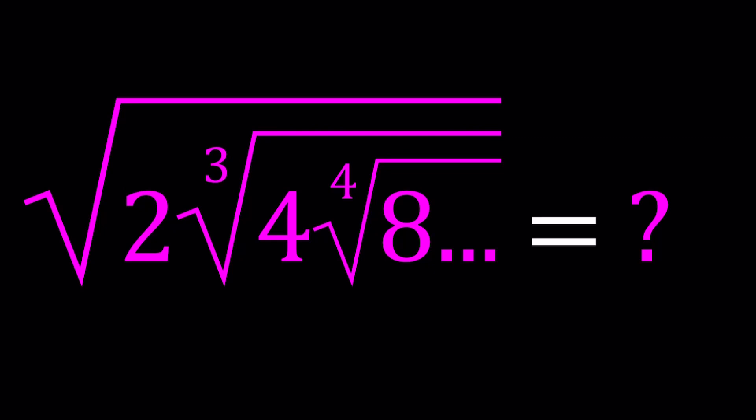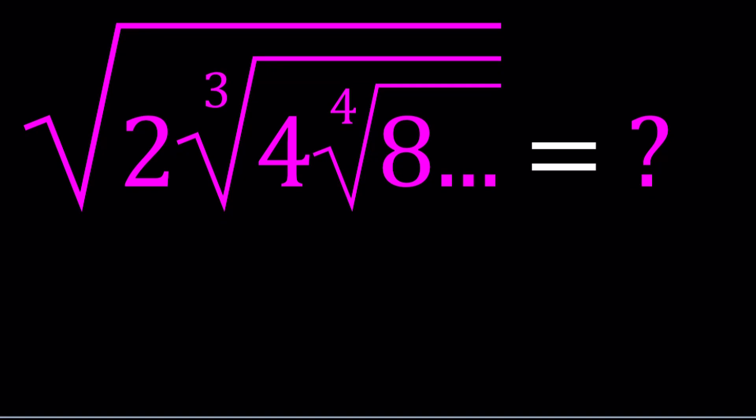Here we go. So let's start by separating the radicals. For example, this 2 is inside one radical, so it's going to be the square root of 2. And then the 4 is under the radical, under the square root, and the cube root. So that gives us the 6th root of 4. And then 8 is going to be under 2, 3, 4, which is going to give us 24. And that's 8, so on and so forth.